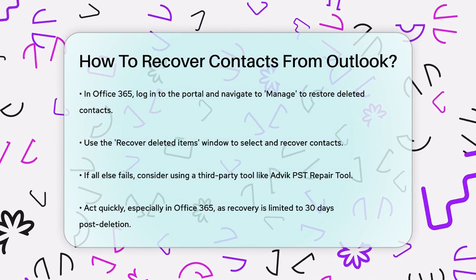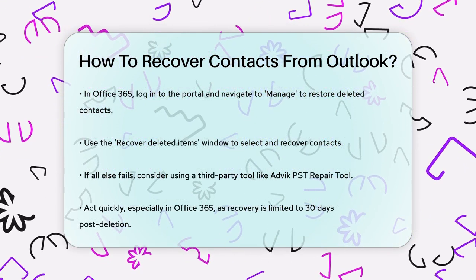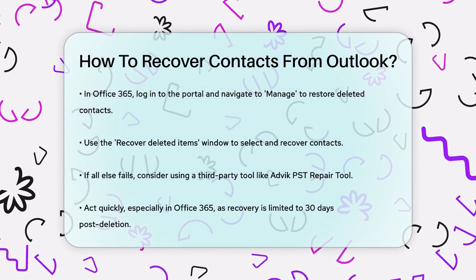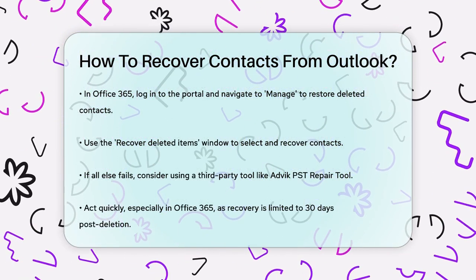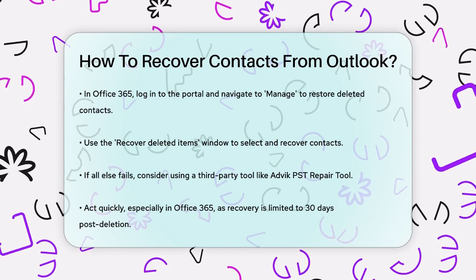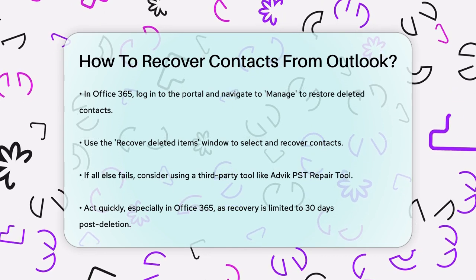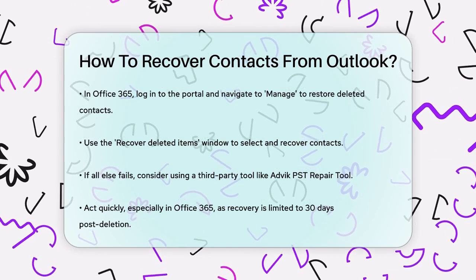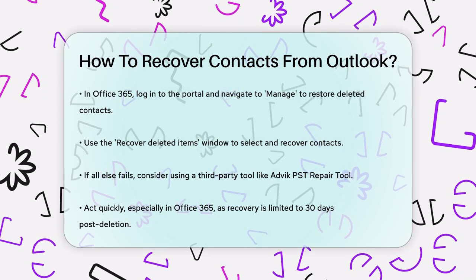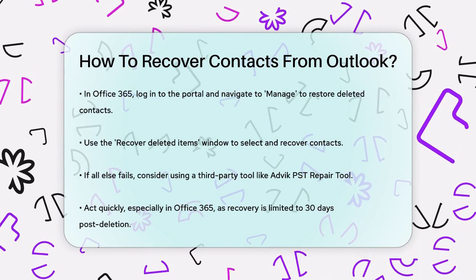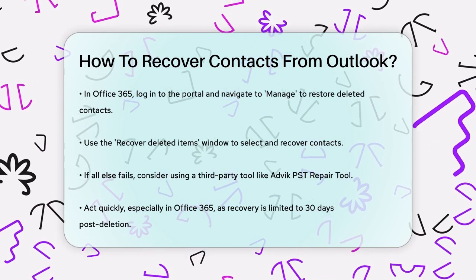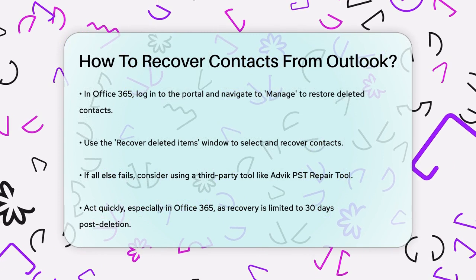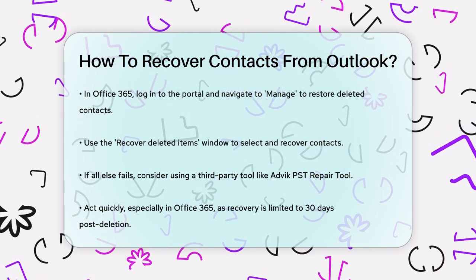If all these methods fail, you might need to use a third-party tool like the ADVIC PST Repair Tool. This tool allows you to recover deleted contacts from your PST file. Simply run the software, add your PST file, select the recovery mode, choose the contact folder, and follow the prompts to save the recovered contacts.